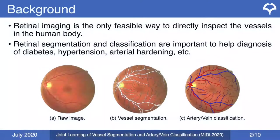Retinal imaging is the only visible way to directly inspect the vessels in the human body. Retinal segmentation and classification are important to help with diagnosis of diabetes, hypertension, arterial hardening, and other conditions.